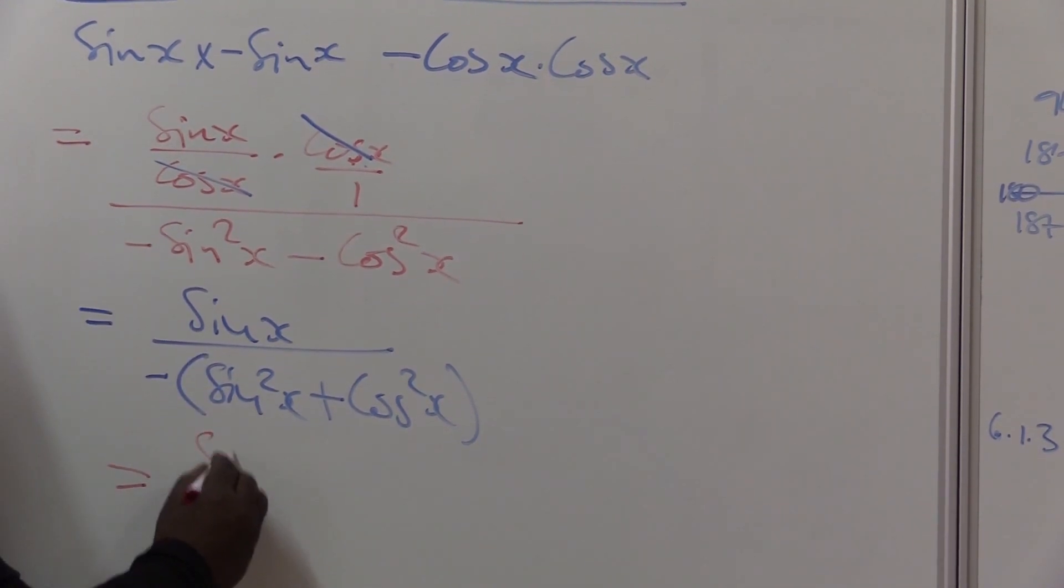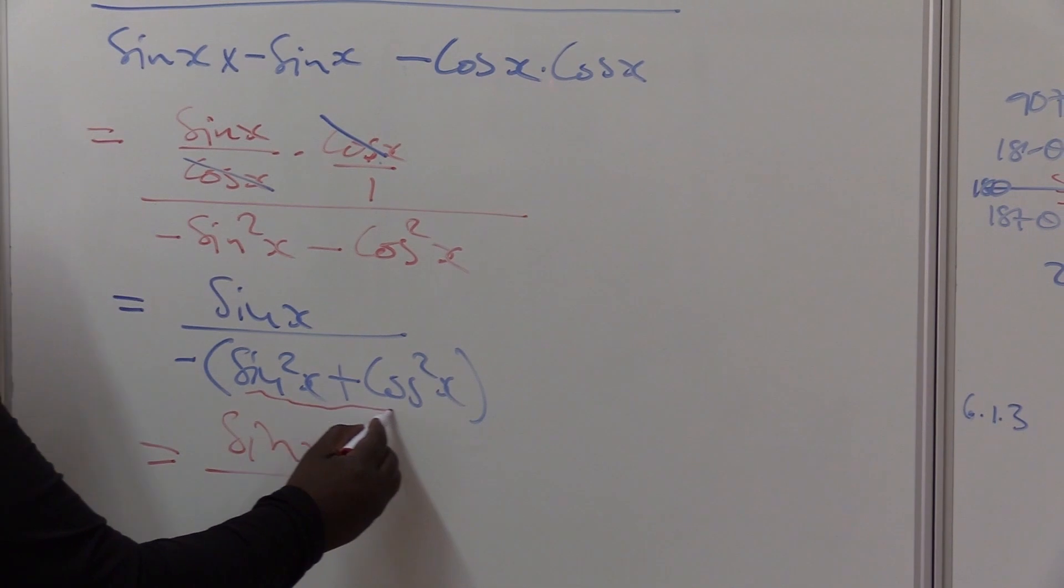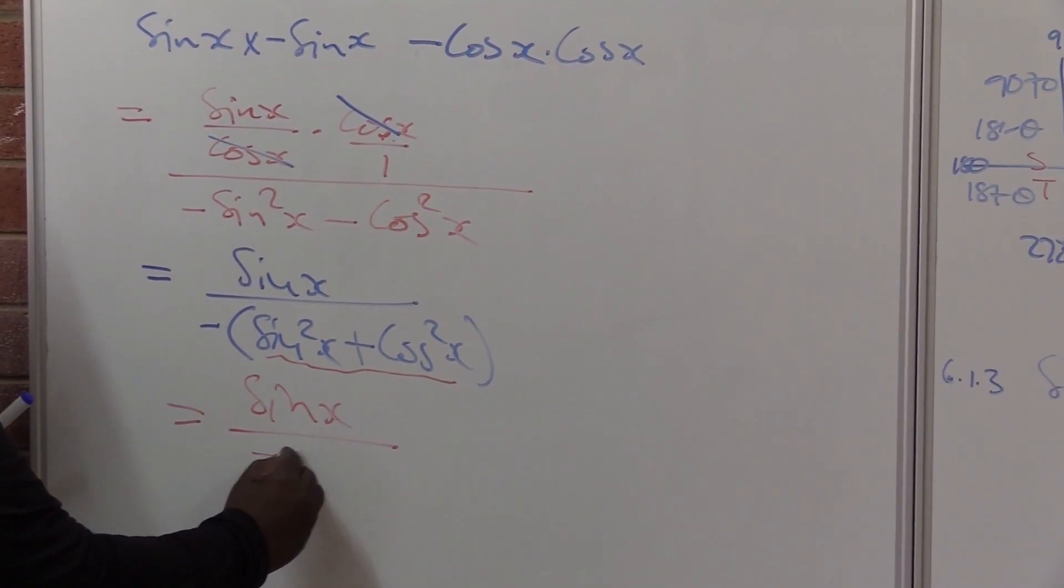This is sin x over... I can see the square identities. What is sin squared theta plus cos squared theta? It is 1. So this is minus 1.